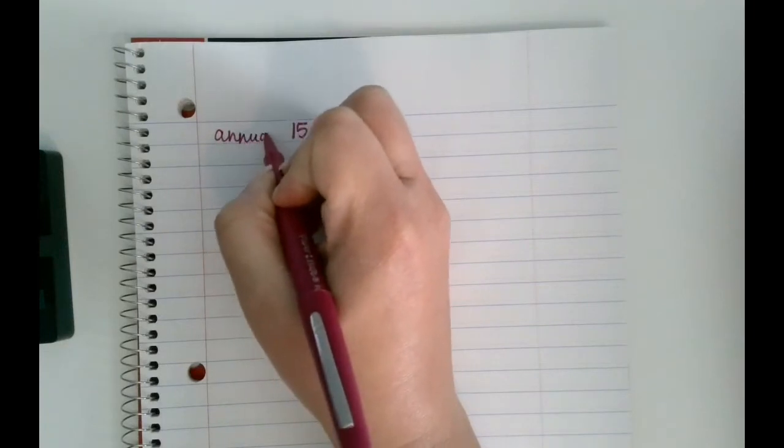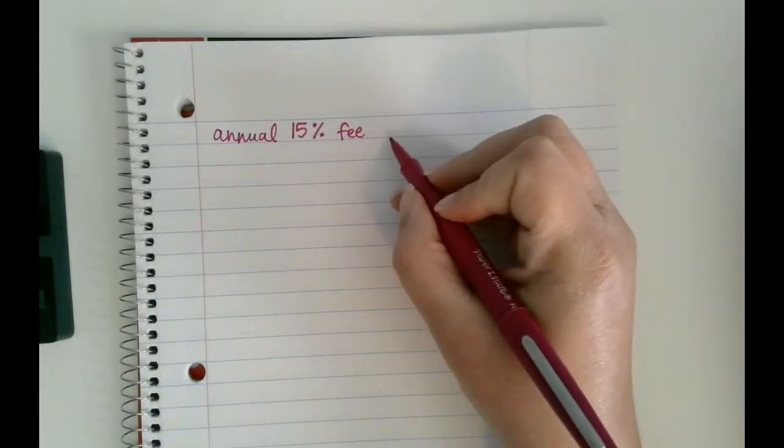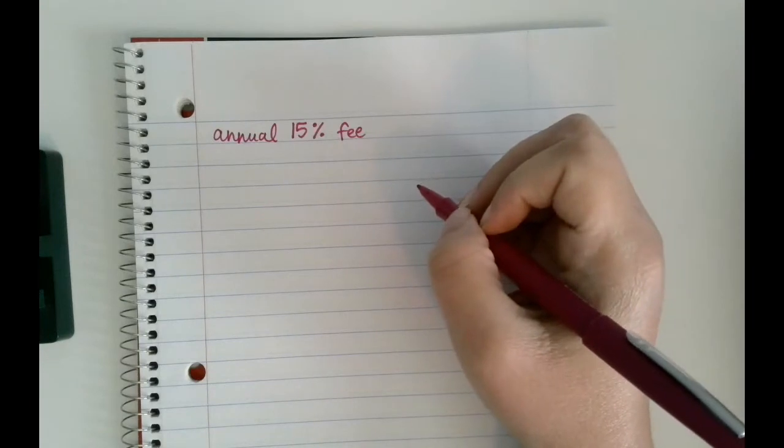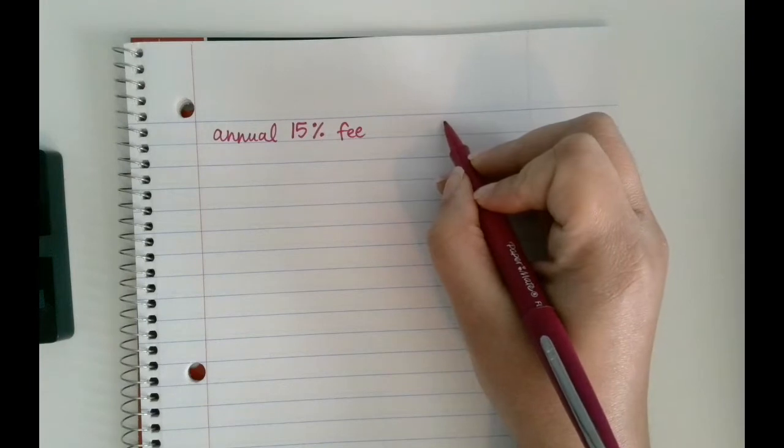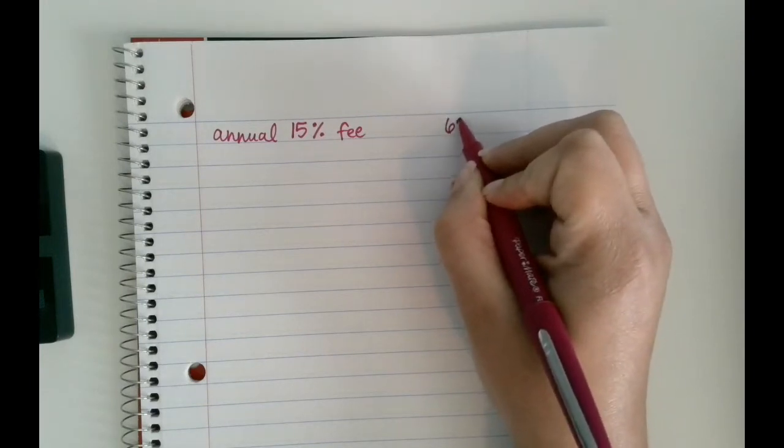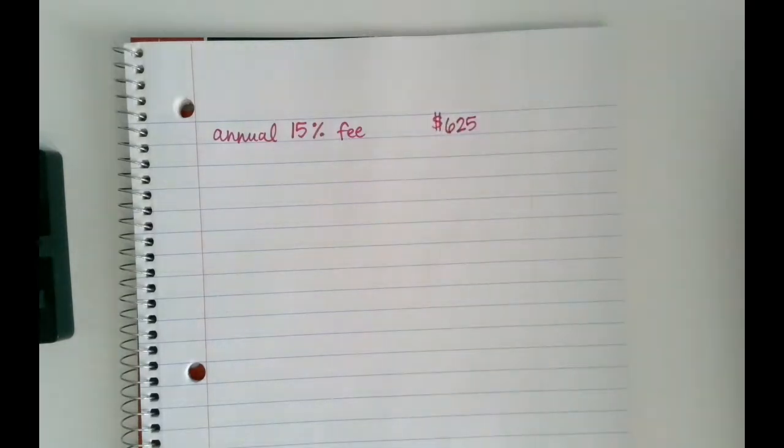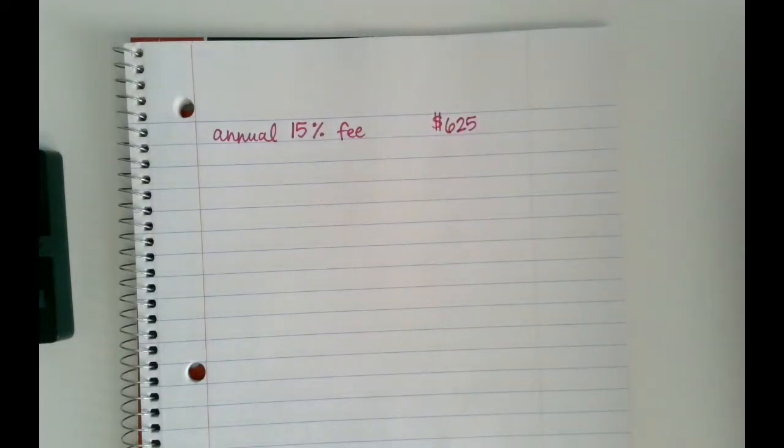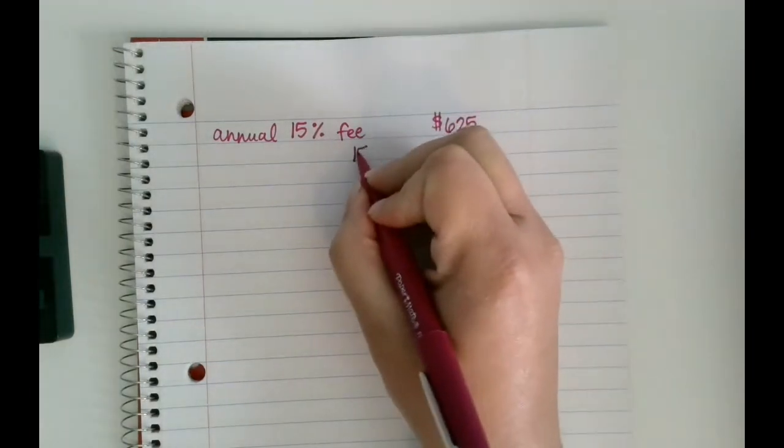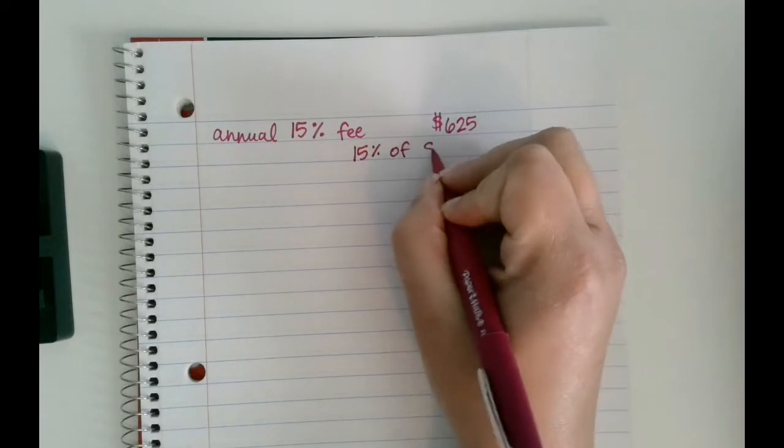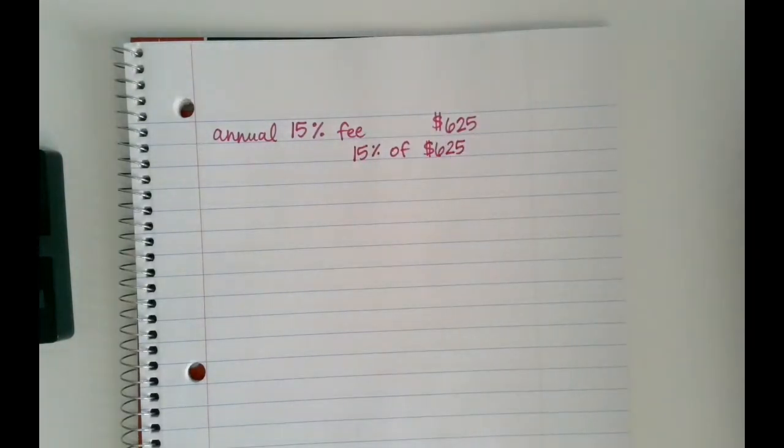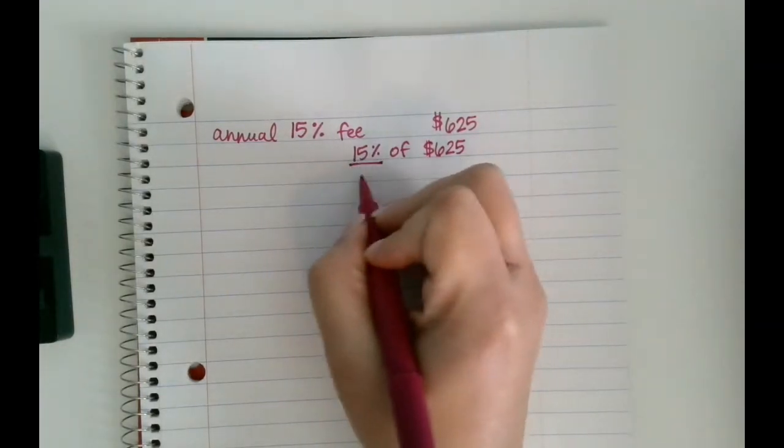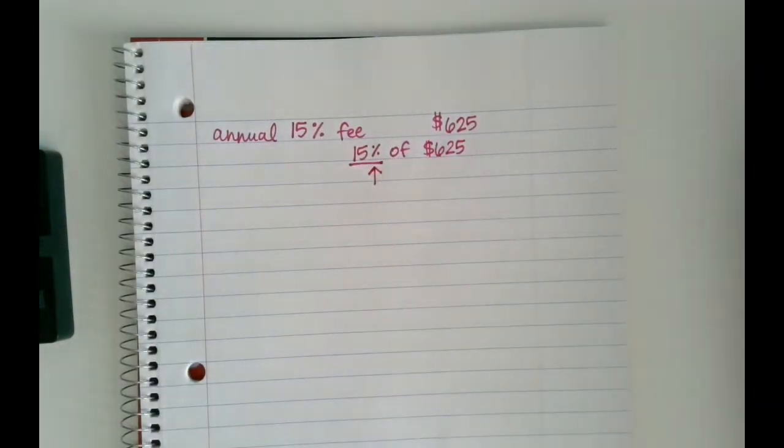A lot of times credit cards will have fees attached to them if your balance gets above a certain amount, or they might even just have an annual fee which means it's a fee every year. Let's just talk about that for a minute. If they had an annual fee on a checking account and it's a 15 percent fee - that's a pretty high fee but we'll just go with it - so if I had let's say $625 in my checking account and I knew I was gonna have a 15 percent fee, well that would mean I need to find 15 percent of the $625.